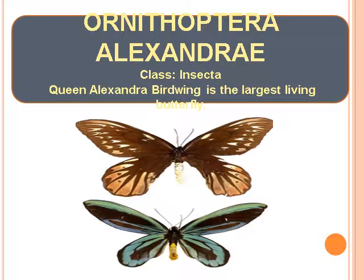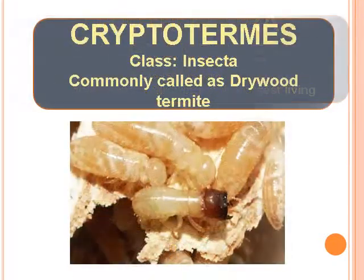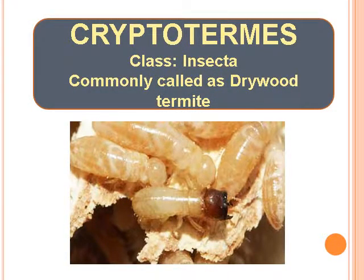Ornithoptera Alexandrae — Class Insecta, Queen Alexandra's Birdwing, is the largest living butterfly. Cryptotermes — Class Insecta, commonly called as Drywood Termite.